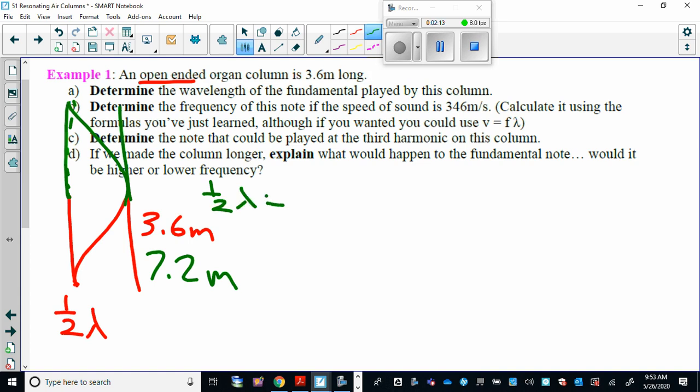Everybody make sense for that? You could say, well, half a wavelength equals 3.6, then a full wavelength, because it says determine the wavelength, not determine the half wavelength or the one and a half wavelength, equals x. Just cross multiply and divide and you get 3.6 divided by half, which is 7.2. So that one's pretty straightforward.